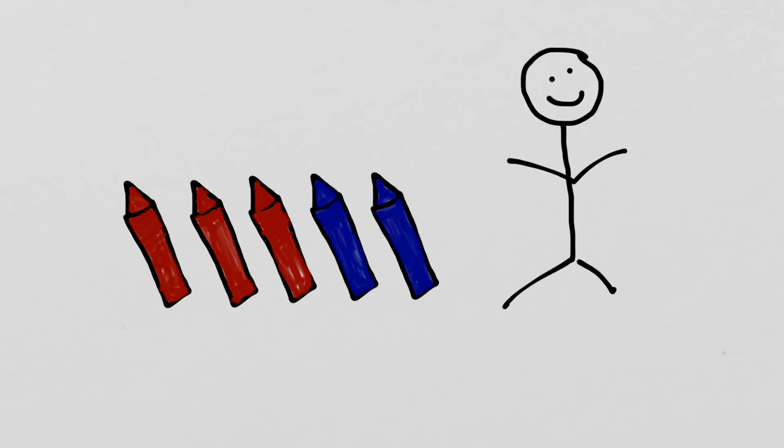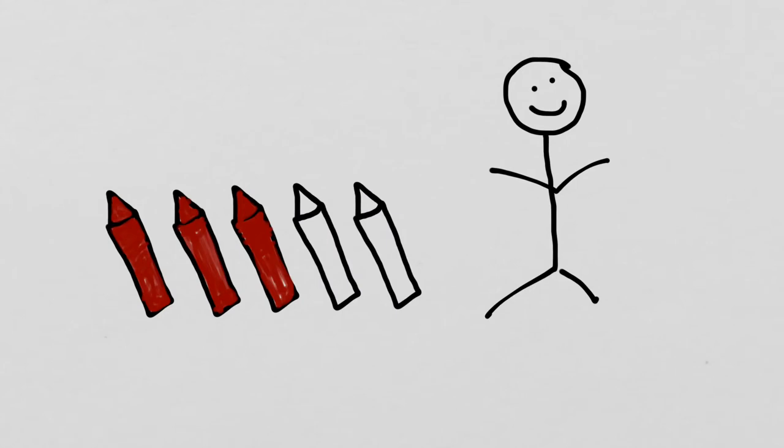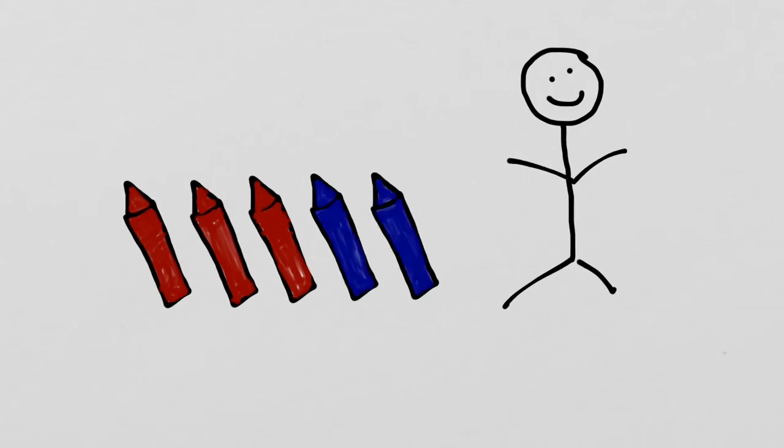Now how could we write this as an addition problem? If we look back, we had three that were red, and we have two that are blue, so if we thought about it that way, we might think, okay, that's 3 + 2 = 5. We have three red plus two blue equals five crayons in all.